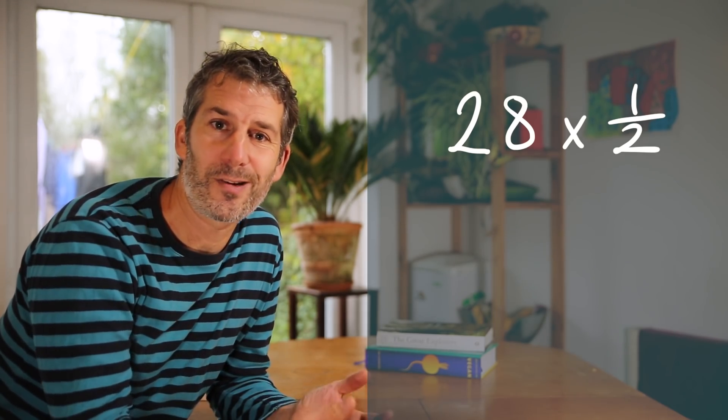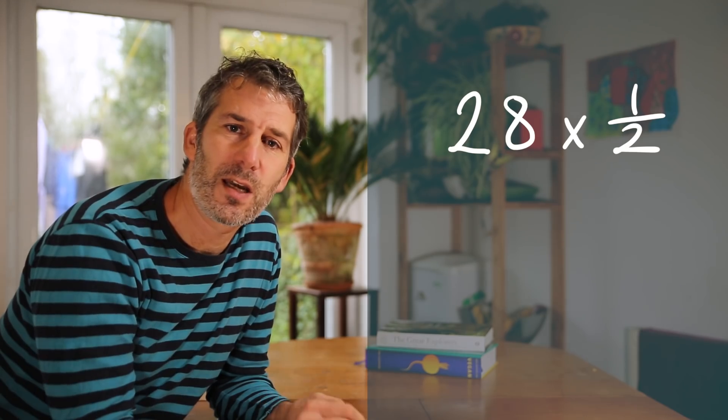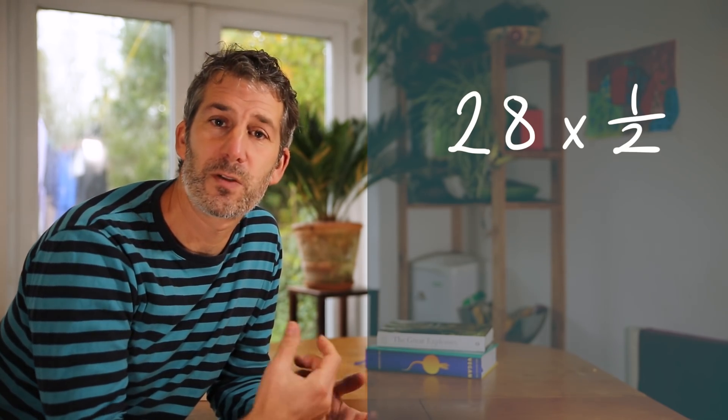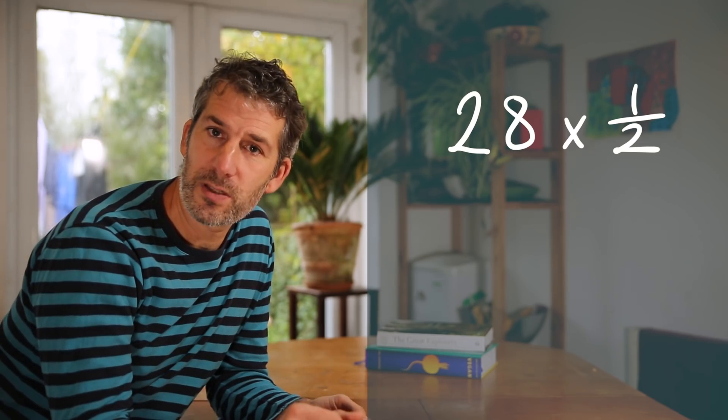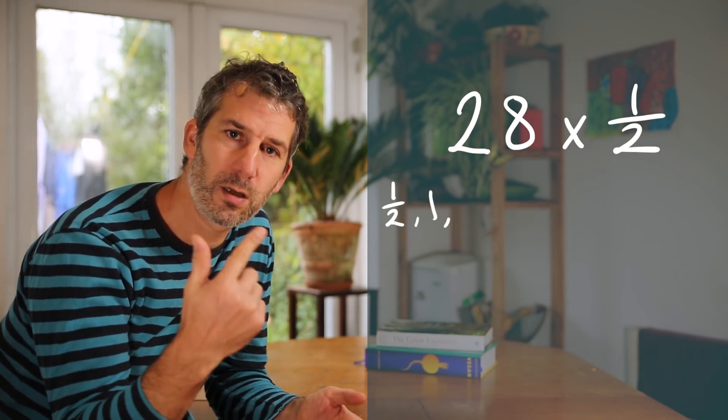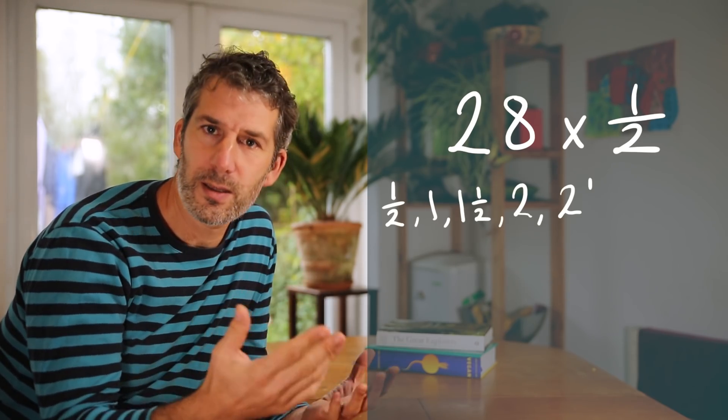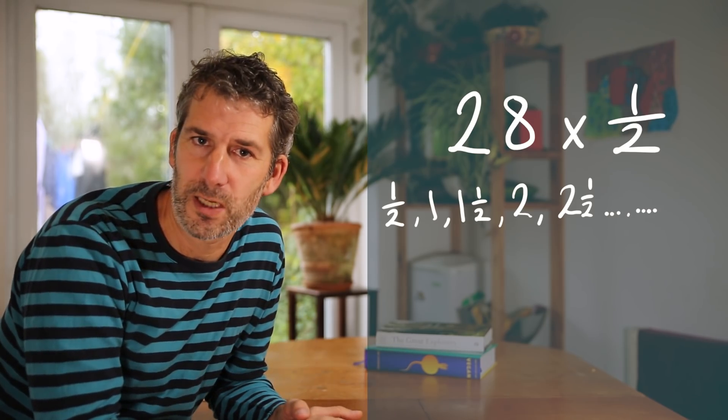Well 28 times a half means you have 28 halves, 28 lots of a half. So you could count up in halves until you have 28 of them. So half, 1, 1 and a half, 2 and so on until you've done that 28 times and you'll end up with an answer of 14.